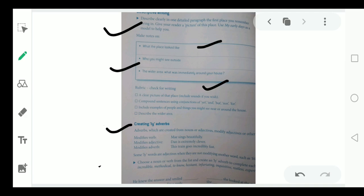Look at this, creating L-Y adverbs. We have already read about adverbs. And now, we are going to learn how to make L-Y adverbs. Let us read first the definition. Adverbs which are created from nouns or adjectives. Modify adjectives or other nouns. First example is modifies verb. Like, me sings beautifully. Sings is a verb and beautifully is an adverb. We are creating adverb with L-Y.